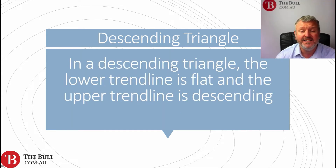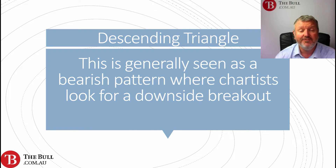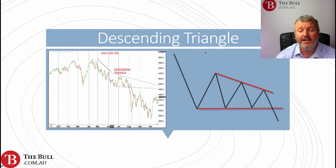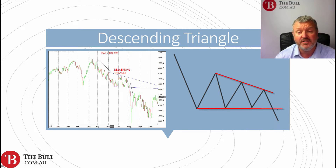Now let's look at the descending triangle. The lower trend line is flat and the upper trend line is downward sloping or descending. Generally seen as a bearish pattern where technical analysts look for a downside breakout, with the underlying prior trend ideally being a downtrend. Looking at the infographic: the market previously in a downtrend, the lows are all at the same level forming a horizontal trend line, with lower highs forming a downward sloping upper trend line for a descending triangle, and the likelihood is a breakdown through the lows for a continuation of the prior downtrend.